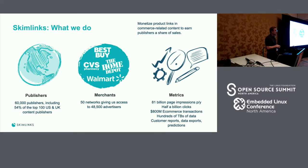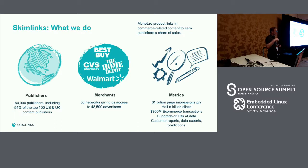We work with around 60,000 publishers around the world, including over 50% of the top 100 publisher websites in the US and UK. We also work with almost 50,000 merchants around the world through networks — we don't do affiliate link tracking ourselves, we're an extra layer on top of the networks. Last year we processed over 80 billion page impressions and almost half a billion clicks, driving around 800 million in e-commerce transactions — hundreds of terabytes of data, a pretty massive big data project.